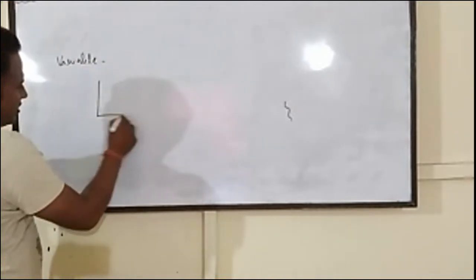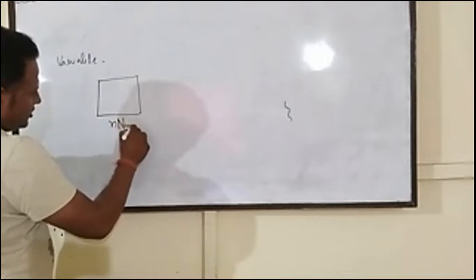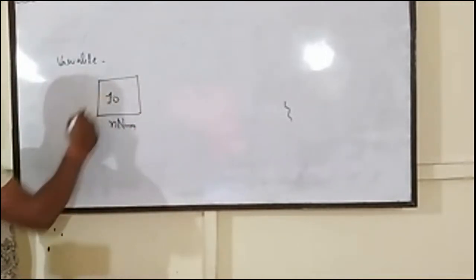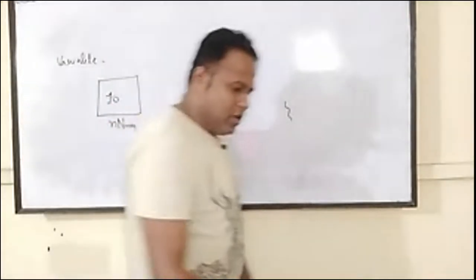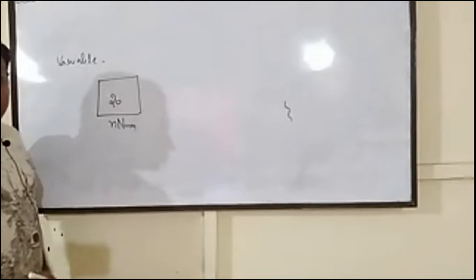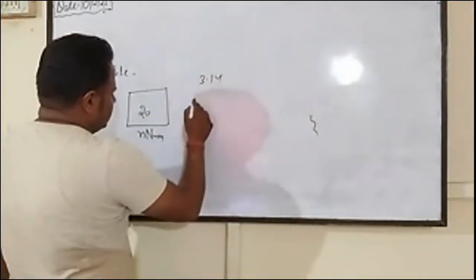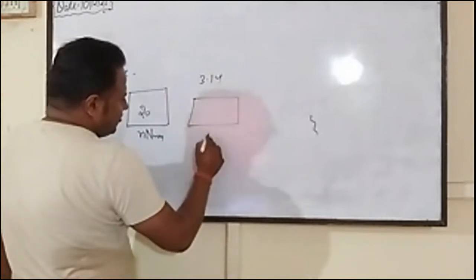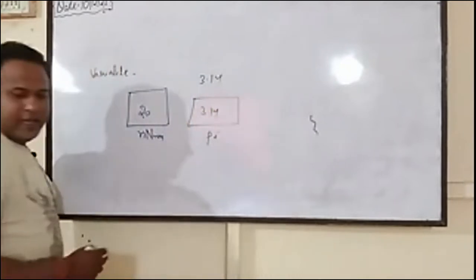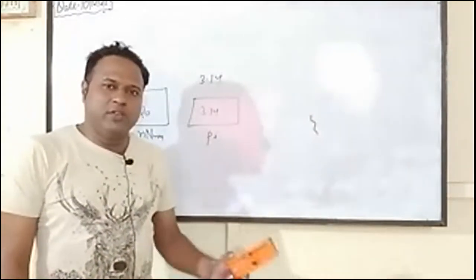When you define a variable, say n, it allocates a memory location. You can store a value there — maybe 10, maybe 20 — the value always changes. When you define a constant, the value is never changed. For example, pi is always 3.14. So if you define a constant pi as 3.14, in any situation that value never changes.